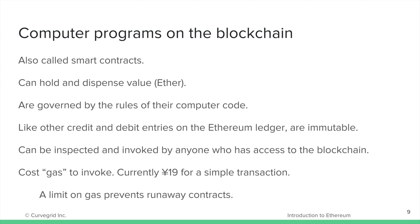Smart contracts are governed by the rules of their computer code. In the previous example, Bob the smart contract could have been programmed as a kind of smart wallet, instructed to only release a certain amount of funds every day, require multiple parties to agree on each transfer of Ether, and so on. With real value involved, trust is paramount, and so like all entries on the Ethereum ledger, smart contracts are immutable once uploaded. This gives those running them a degree of trust that their computer code will not be changed at some point in the future.